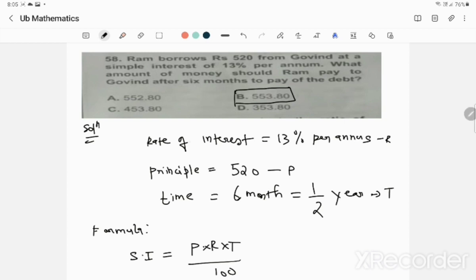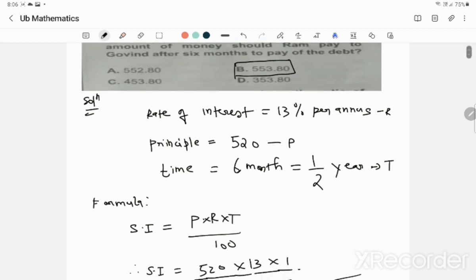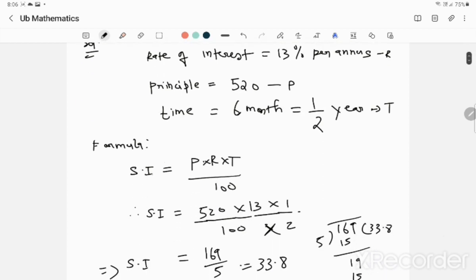The given rate of interest is 13% per annum. The principal is Rs.520 and the time is 6 months, which means half year. So if you use the formula, simple interest equals P times R times T divided by 100. P is 520, the rate is 13, and time is half year, 1 by 2.